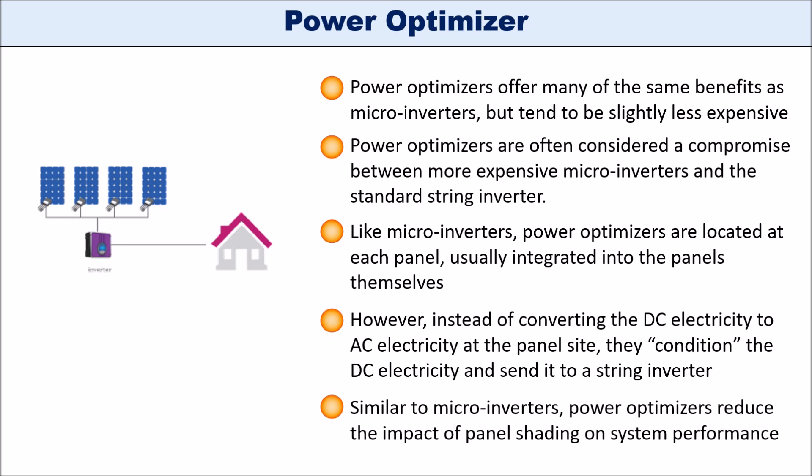Power optimizer systems also offer panel performance monitoring. They tend to be more affordable than micro inverters but more expensive than string inverters. So in a home situation where you have trees or buildings around that may cast a shadow, you might want to go with a micro inverter or power optimizer. But if you're on a farm with an open field to install panels — with no nearby trees to cast shadows — you could get away with cheaper string inverters and still get as much power from them.